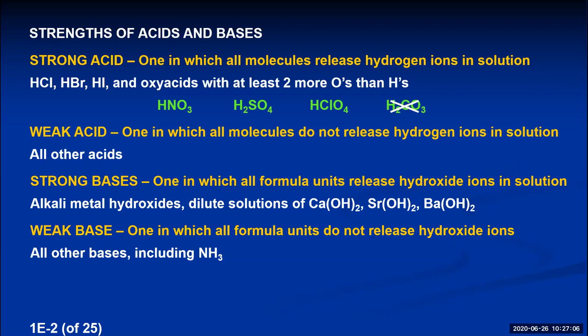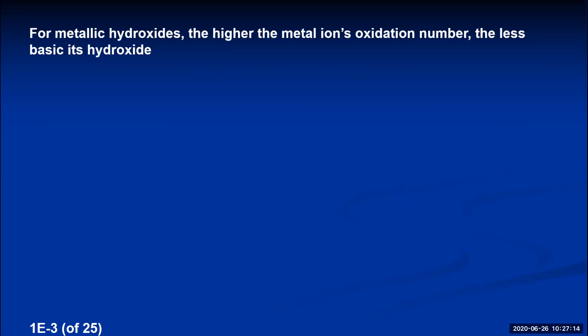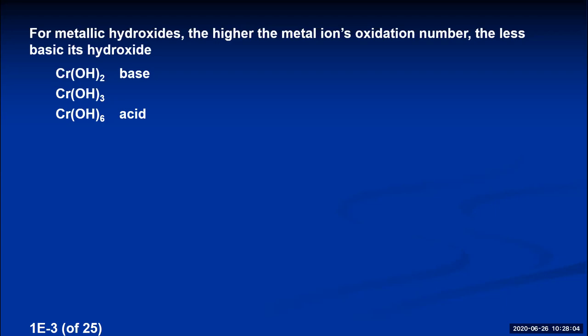For metallic hydroxides — specifically transition metal hydroxides — the metal can form different ion charges and thus different hydroxides. The higher the metal ion's oxidation number, the less basic its hydroxide is. Chromium forms +2, +3, and +6 ions, so it forms chromium(II), chromium(III), and chromium(VI) hydroxides. The most basic is chromium(II) hydroxide (lowest oxidation number), while chromium(VI) hydroxide dissolved in water actually produces an acidic solution.